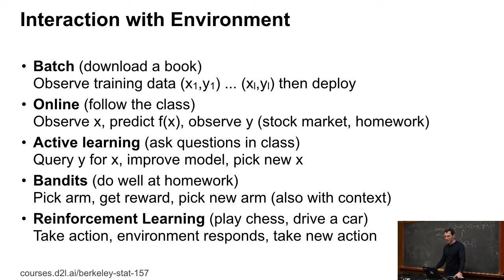Then there are bandit algorithms — you pick an arm, you get a reward, you pick an arm, you may have some context. Then lastly, reinforcement learning. This is actually the most complex of all of those, because in this case your actions have consequences. So let's look at that in a bit more detail.